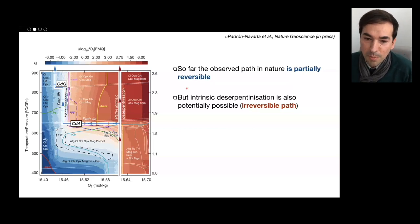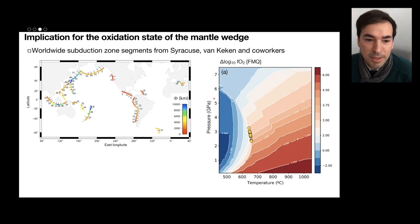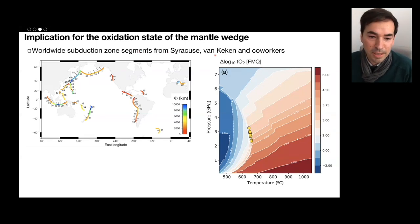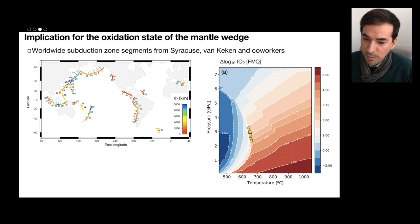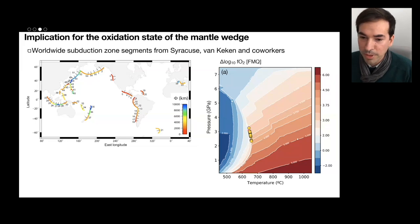What we see in nature is that the path is at least partially reversible, so we have some reduction during dehydration. But the intrinsic case is still possible, so we can try to extrapolate what will happen if we have intrinsic deserpentinization all over the world. This can be done using thermal models from Syracusa, Van Keken, and others. In this P-T diagram we plot in yellow the conditions where subduction slabs will cross the dehydration of serpentinite. You will see a quite high oxygen fugacity going from nearly four to nearly three log units above QFM — extremely high compared to background mantle wedge conditions, which are normally around minus one.